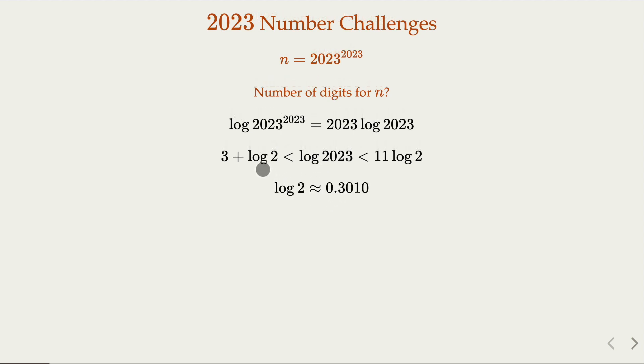When you plug into that inequality, log 2023 is about 3 point something, and the whole thing times 2023, the range is about that. This tells us the number of digits k here for this big number 2023 raised to 2023 power is bounded by 6699. So k is bounded by 6699.